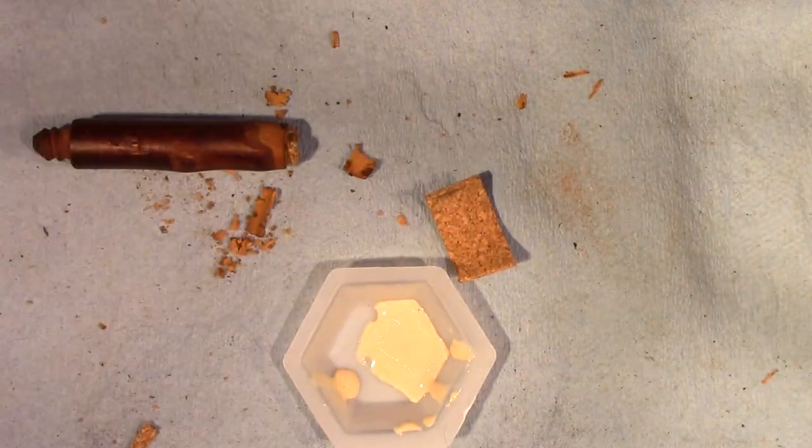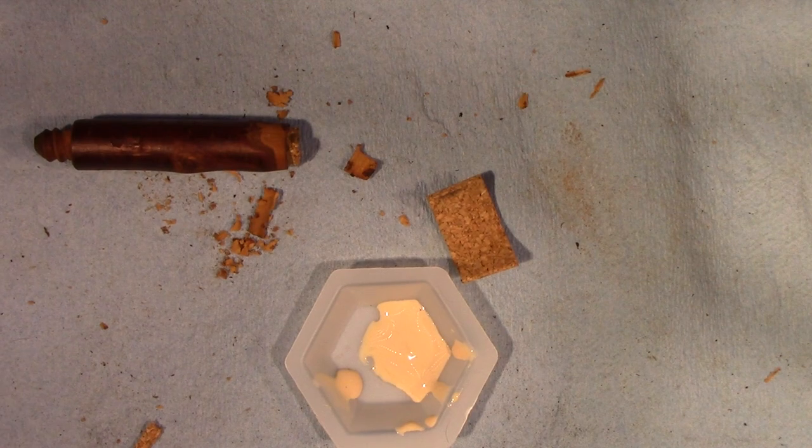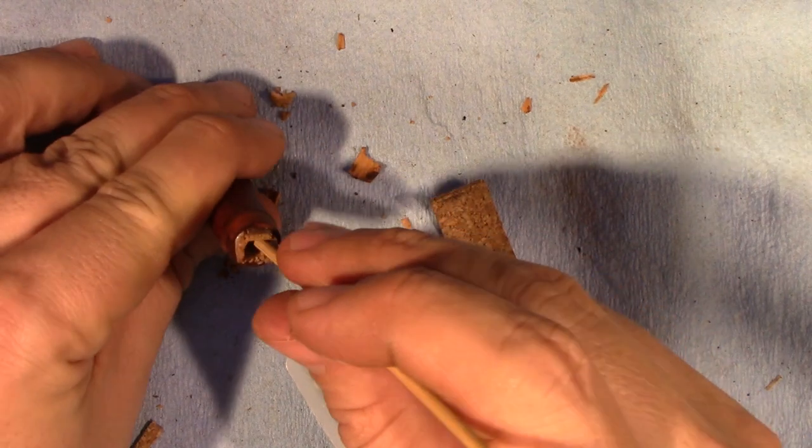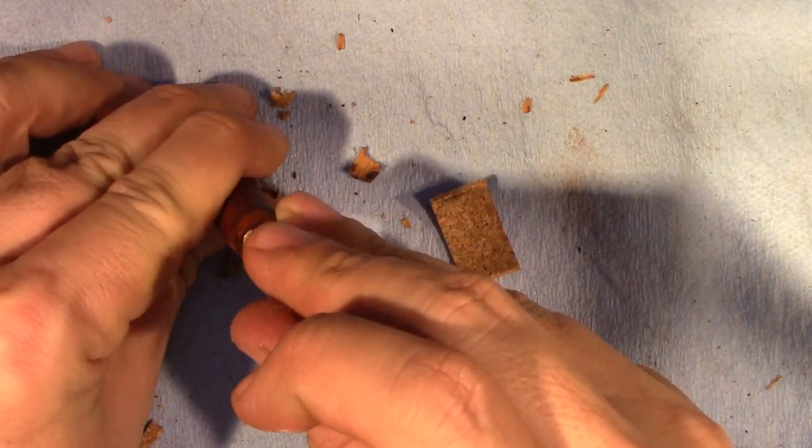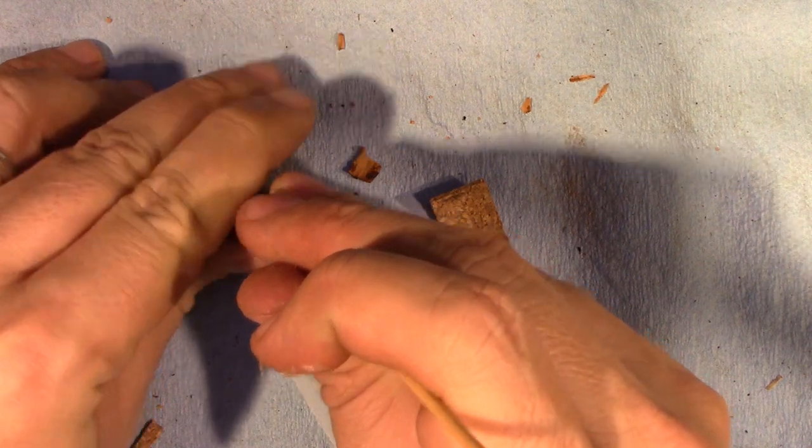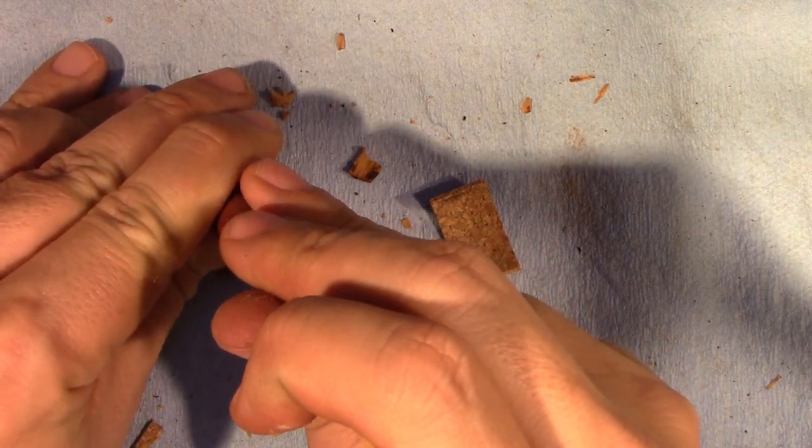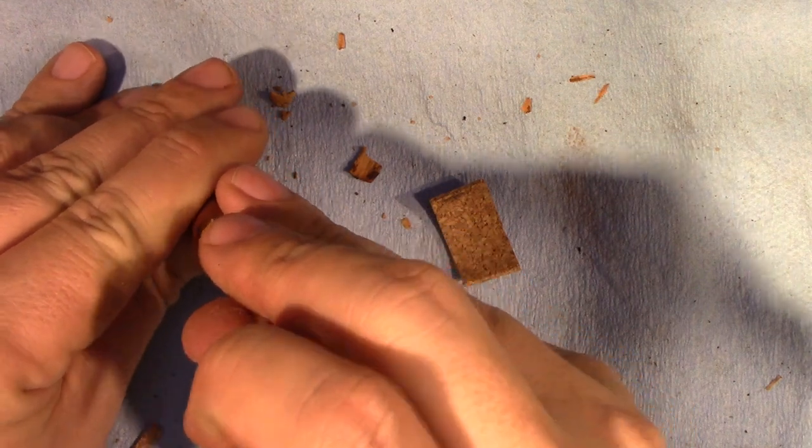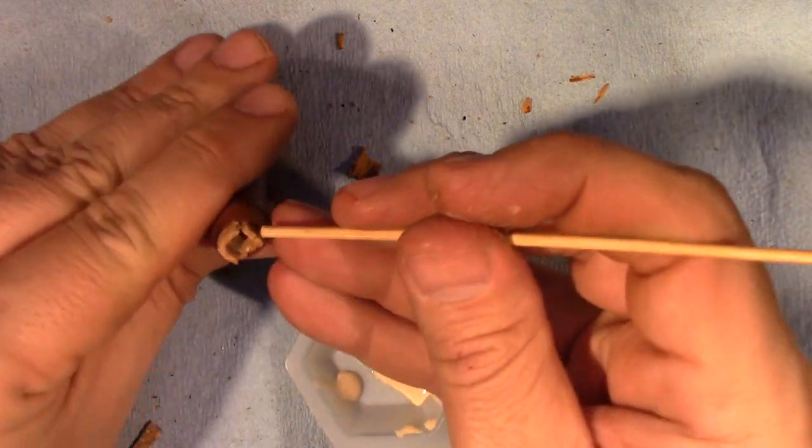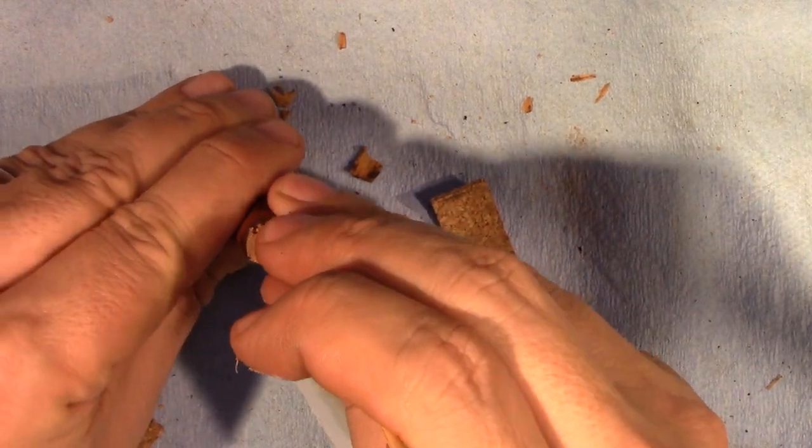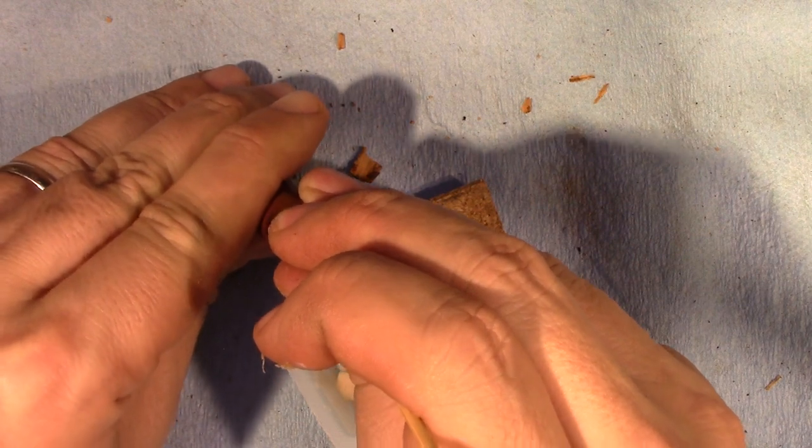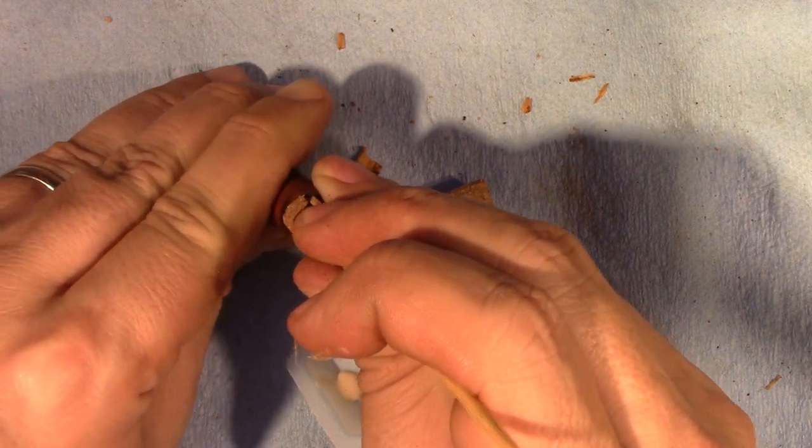And that's seated. Okay. So, now I'm going to take the other end of this bamboo skewer and I'm just going to go ahead and try to even out the inside here. Just applying pressure.